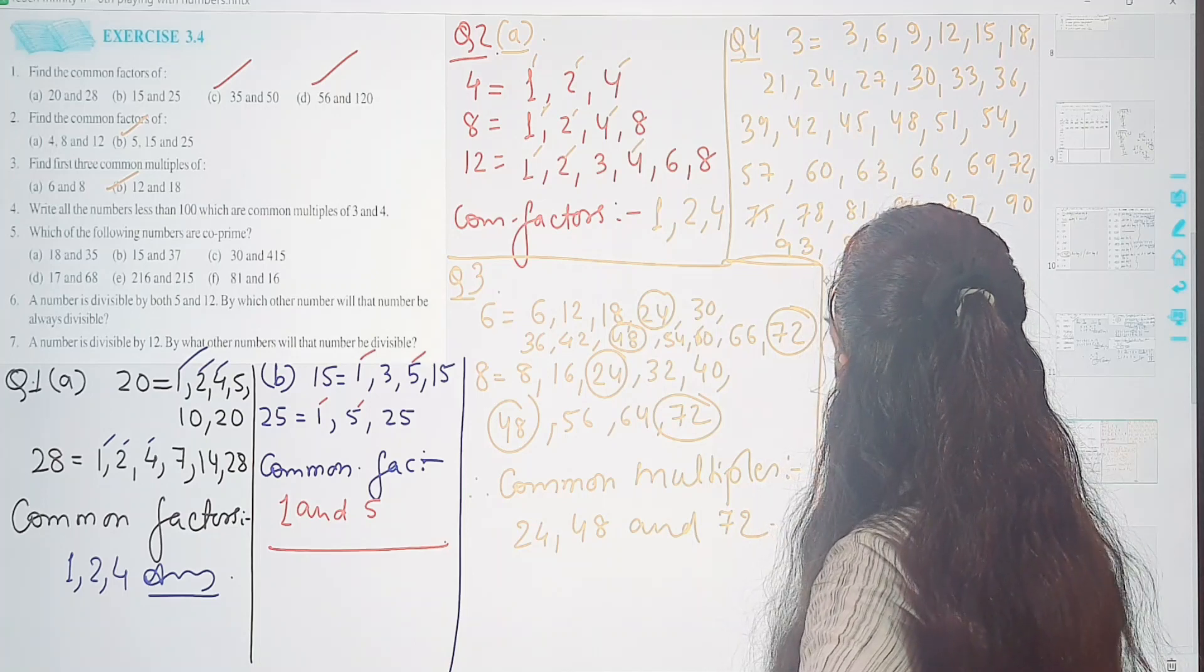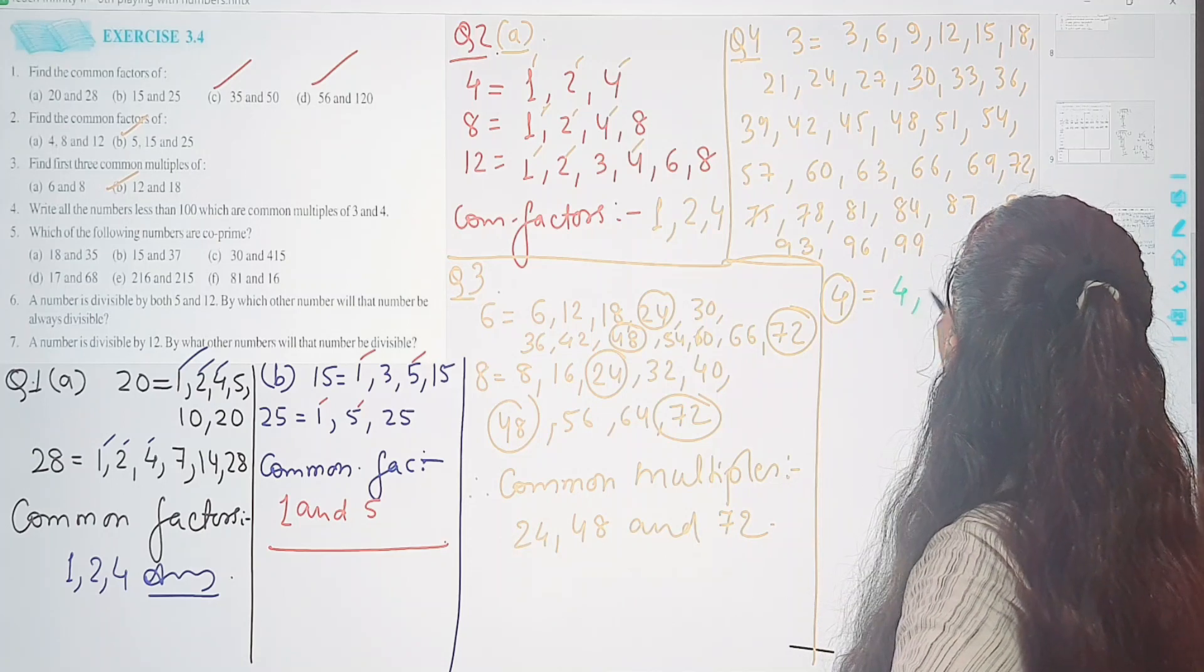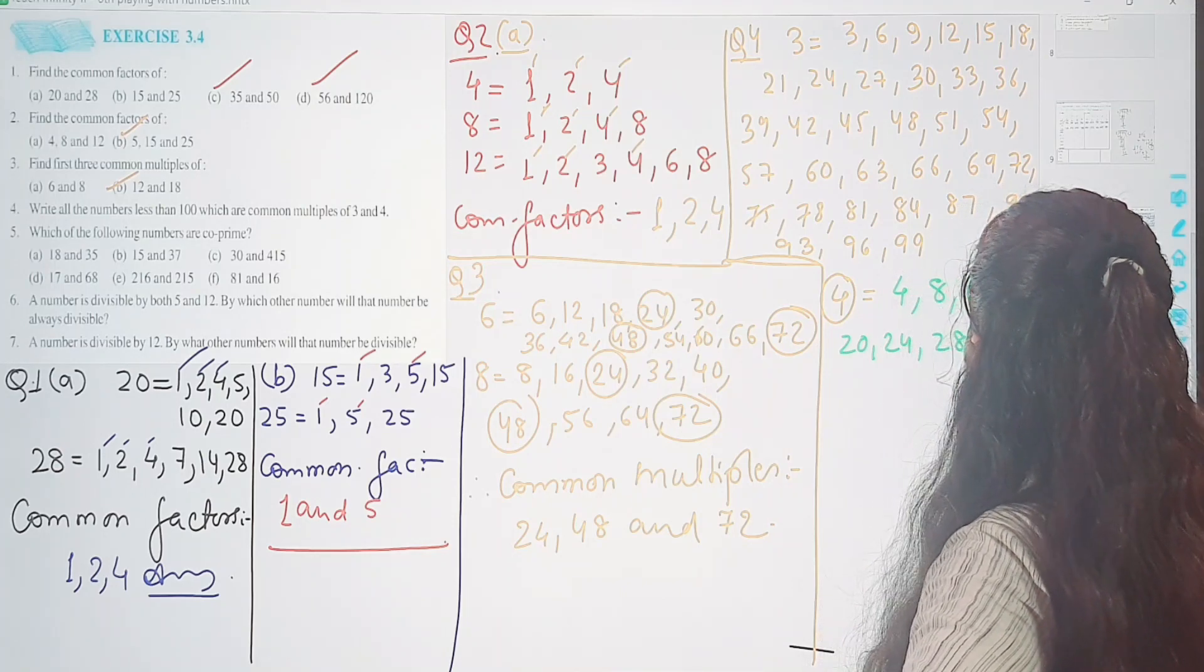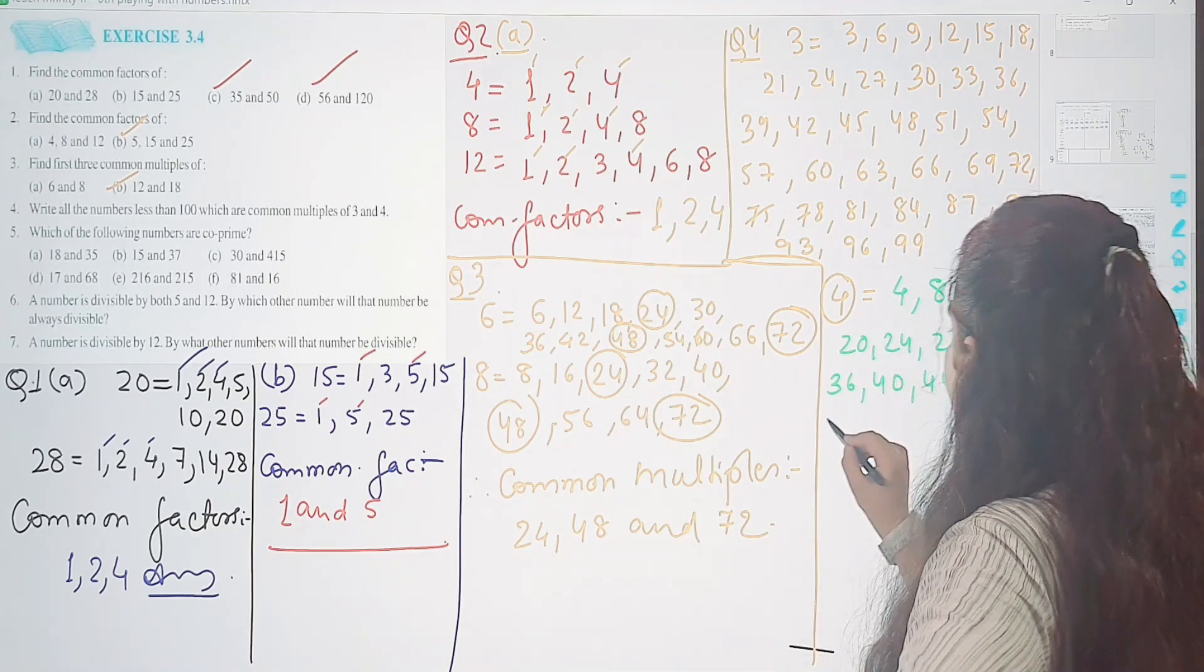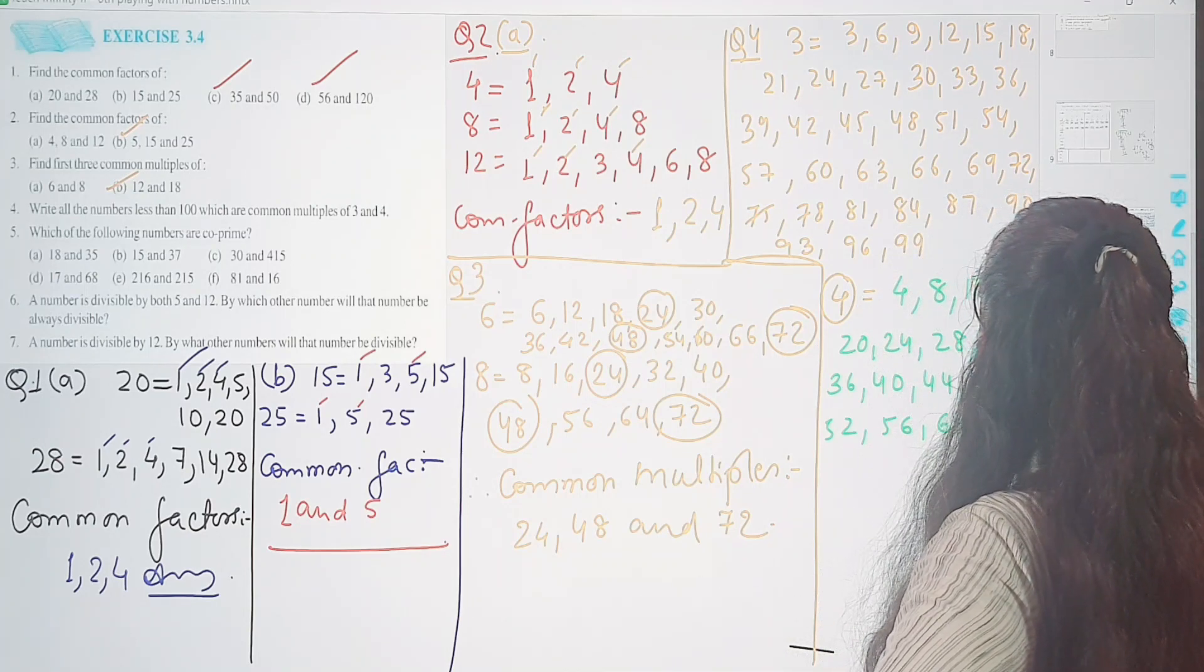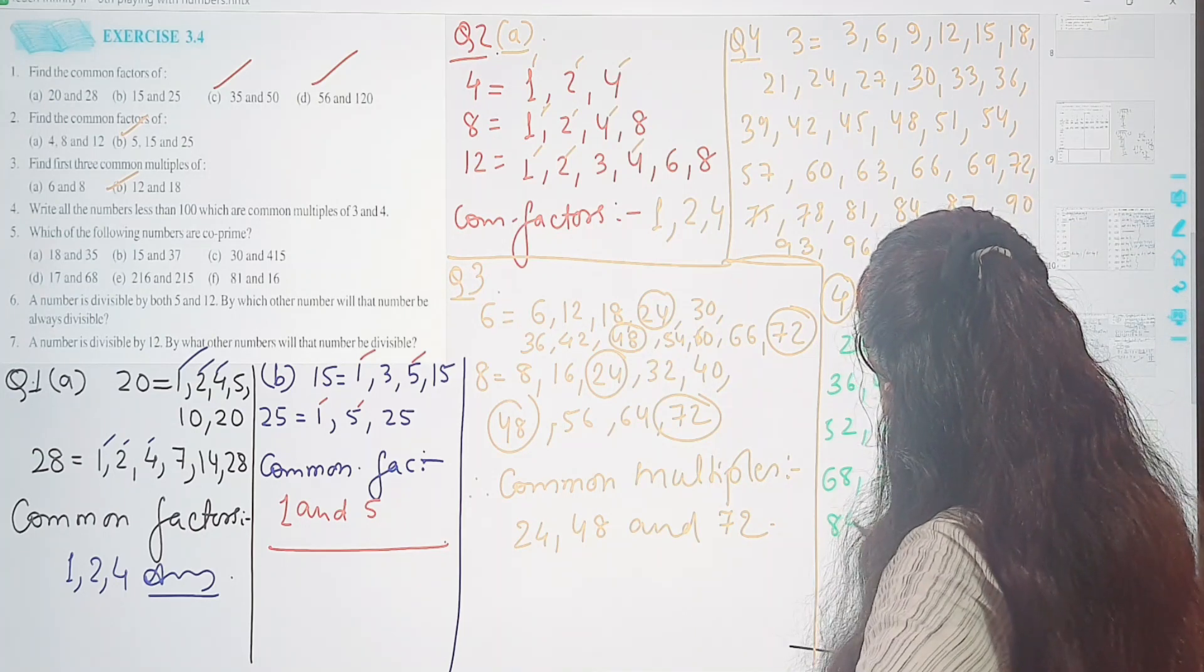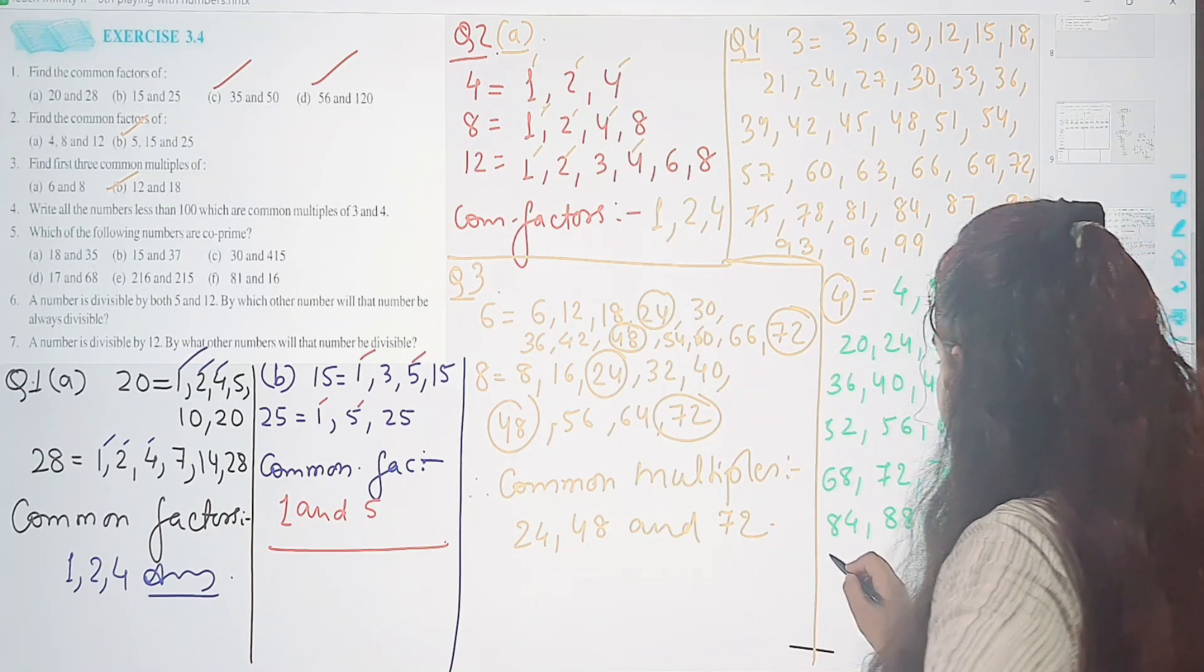Ab leetae hai 4 ke liye. 4 ke table ko krun ka dekhte hai. 4, 8, 12, 16, 20, 24, 28, 32, 36, 40, 44, then 48, 52, 56, 60, 64, 68, 72, 76, 80, 84, 88, 92, 96, and 100.